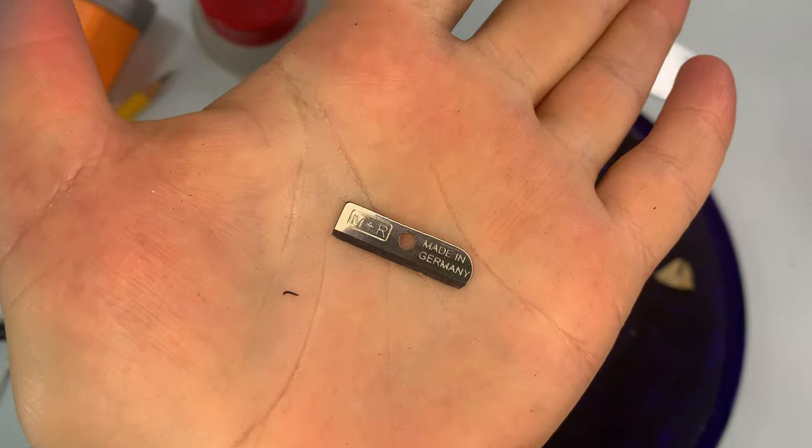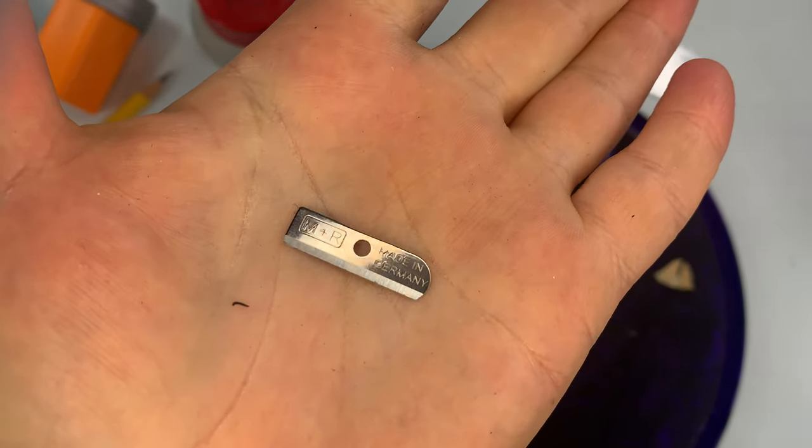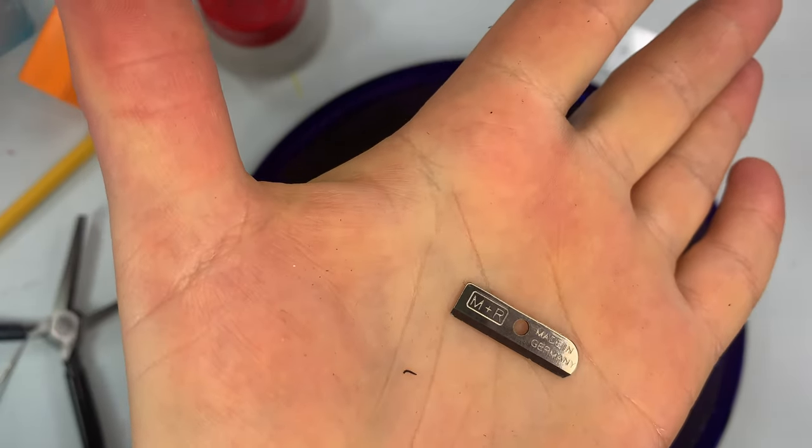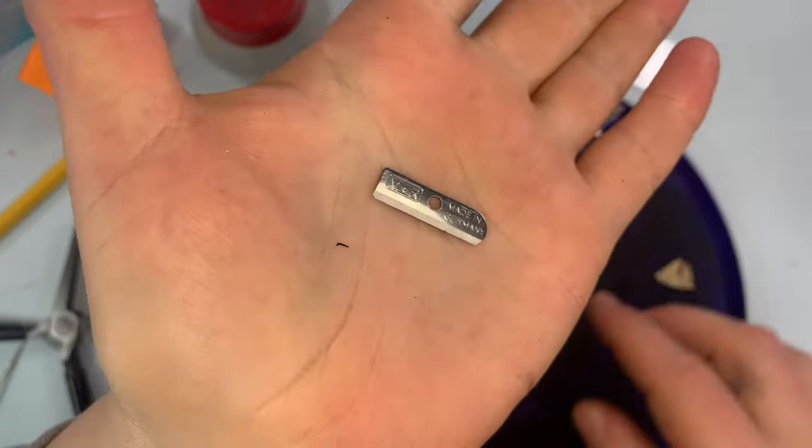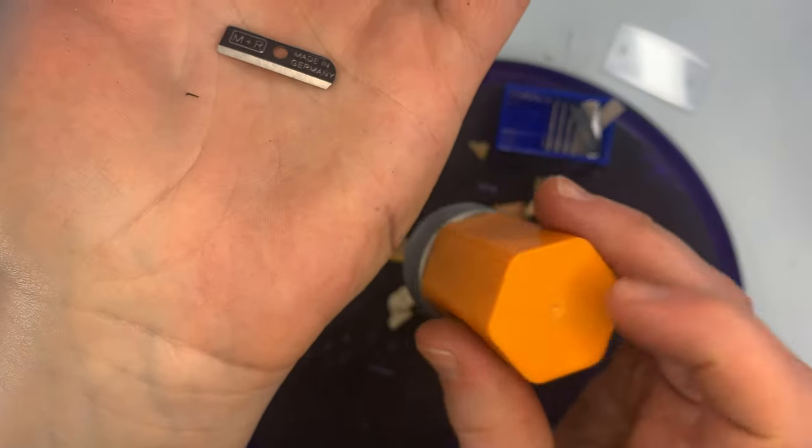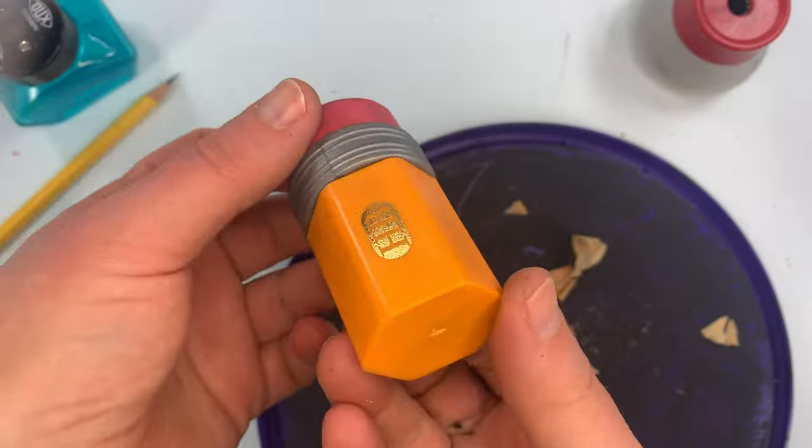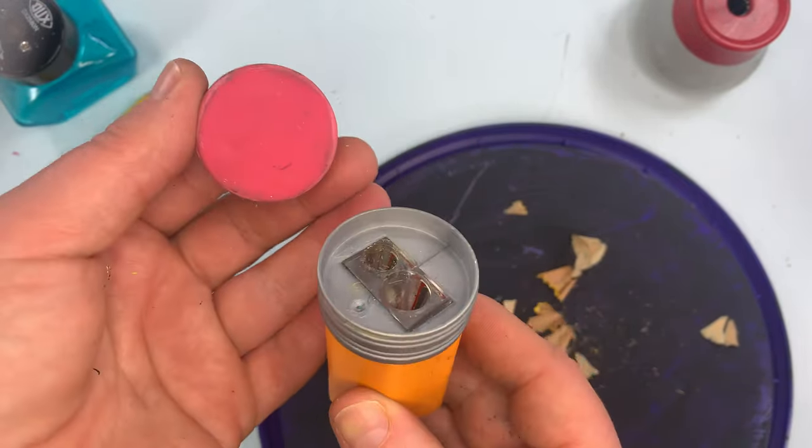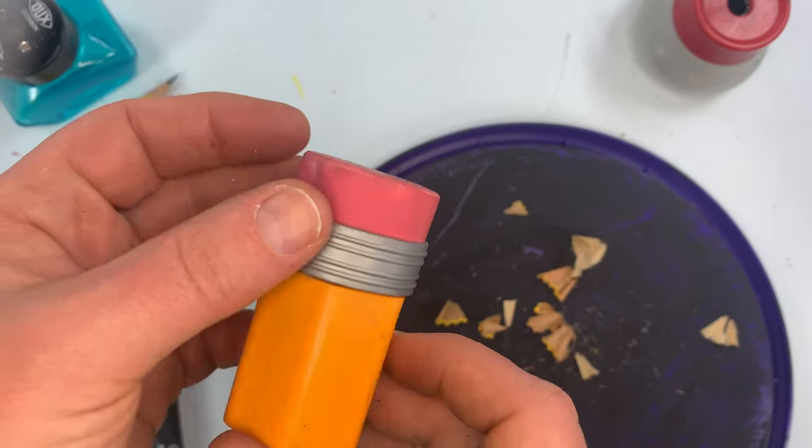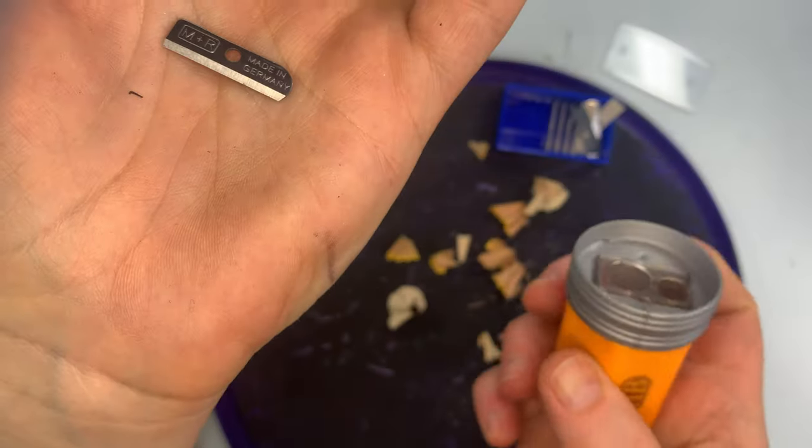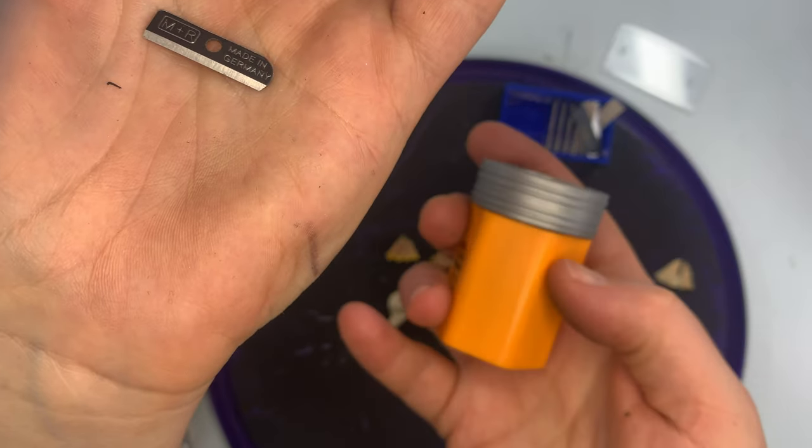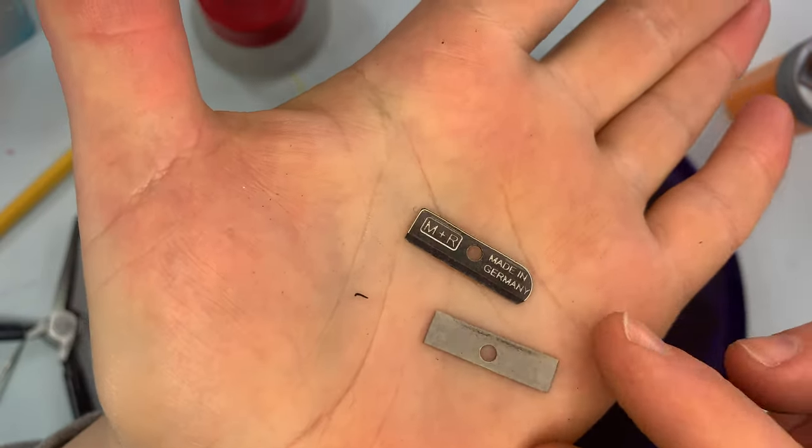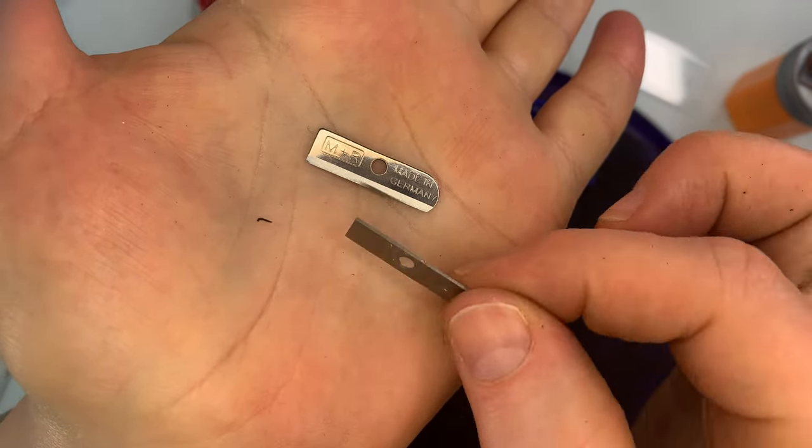This is what the blade looks like. M&R made in Germany. So this is the standard size but I have this sharpener. I forget what company made this. It has like an eraser on the top. It's either Kikkerland or Accoutrements or some gifty novelty gifty brand. And this one takes these blades.